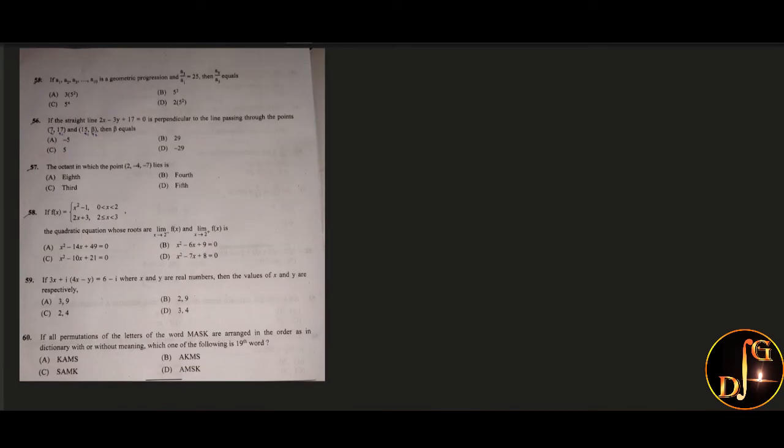Next, if A1, A2, A3 up to A10 are in geometric progression and A3 by A1 is equal to 25. A3 by A1 is ar square by A which is equal to 25, which implies R square is equal to 25, which means the value of R is 5. Next, we have to find A9 by A5 which is ar power 8 divided by ar power 4. That is r power 4, that is 5 power 4. So the answer is option C.